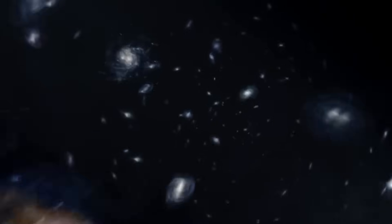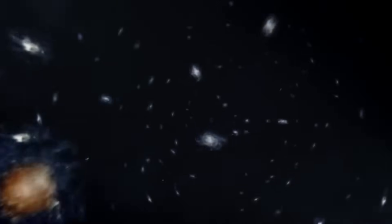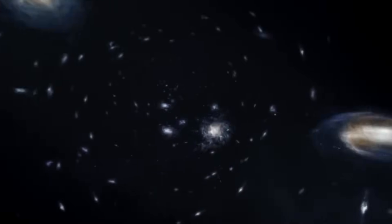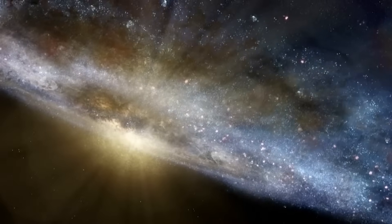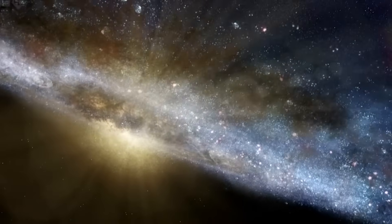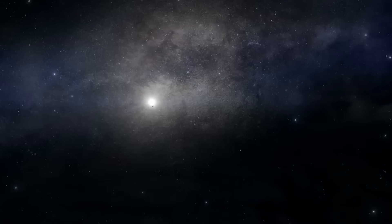However, some astronomers believe there may be another important player in this cosmic story. Black holes, similar to the one at the center of the Milky Way, may have acted as a kind of beacon to help disperse ultraviolet radiation. It's true, these black holes could have played a much more significant role in the evolution of the cosmos than previously believed.